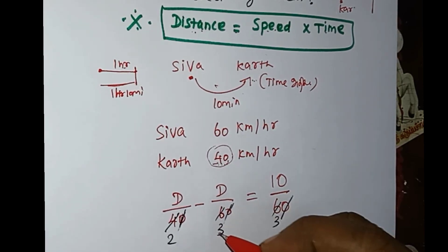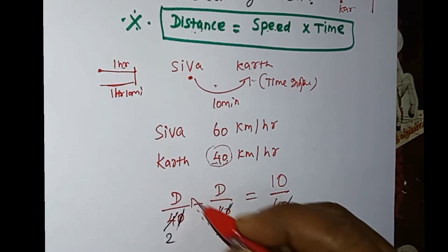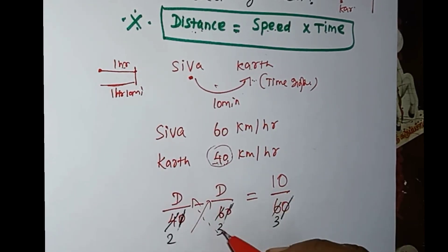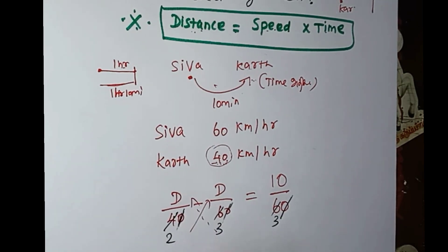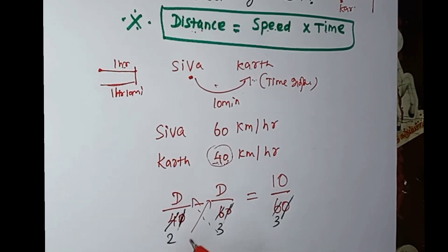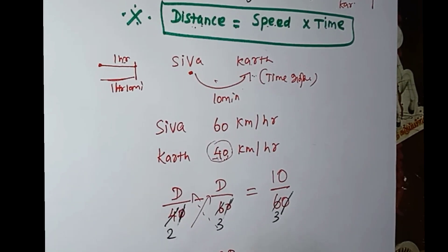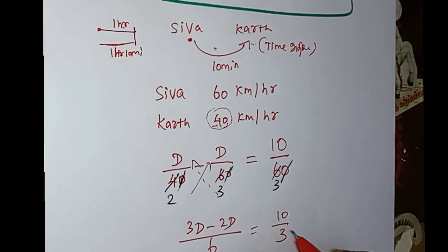Now cross multiply. We get 3d minus 2d divided by the denominator, equal to 10 by 3.